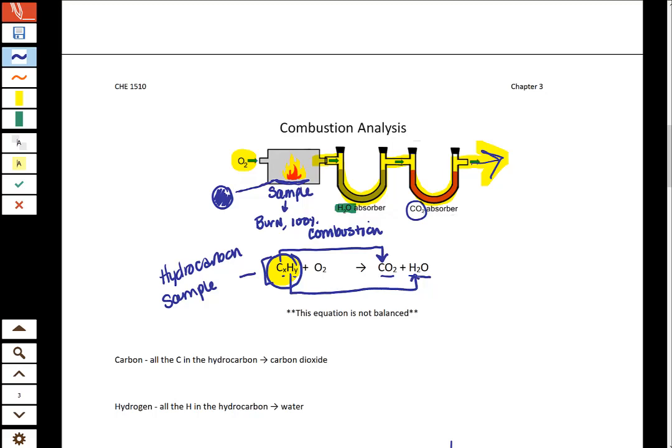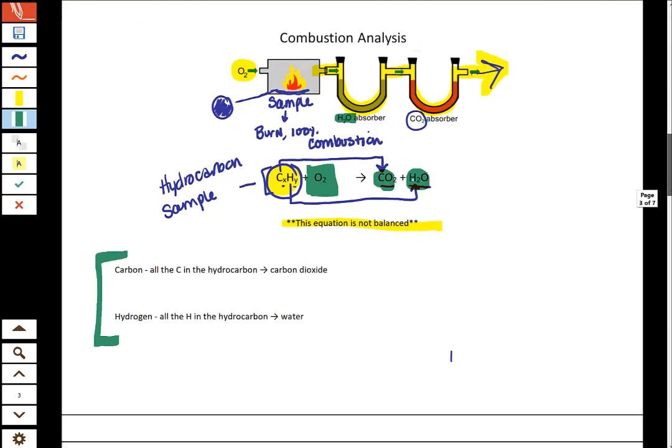So part of the problem is we can't balance this equation because we don't know the chemical formula that we're starting with, but what we do know is all the carbon turns into CO2 and all of the hydrogen turns into H2O, and that this oxygen is in excess, meaning that the CxHy, that's your limiting reactant, and your O2 is going to be your excess reactant. And so in words right here we're just summarizing the same thing—that all your carbon turns into the carbon that's in CO2, and all your hydrogen turns into the hydrogen that's in H2O.